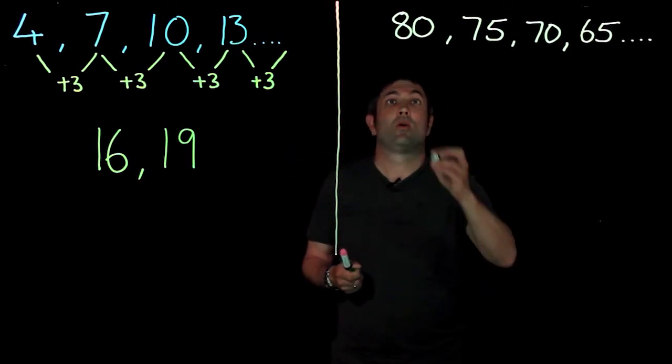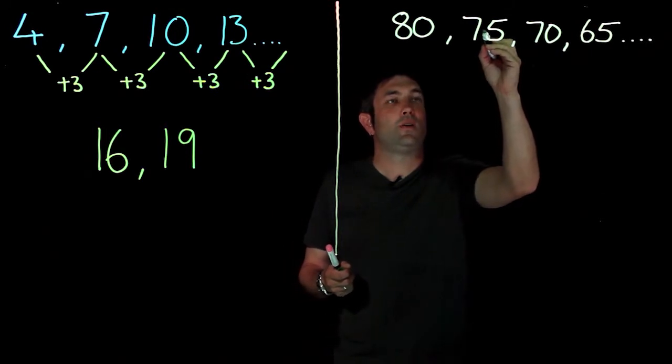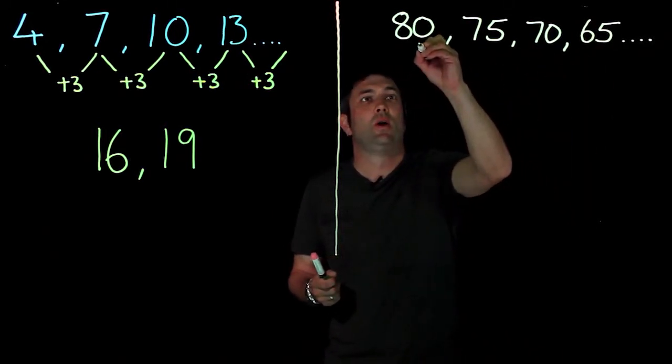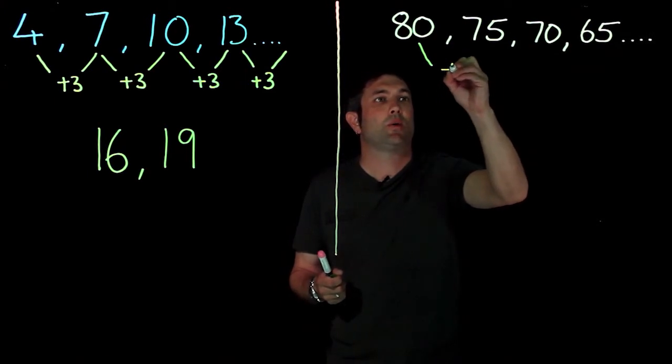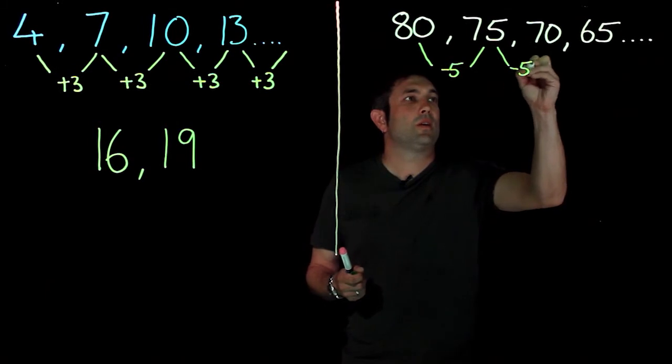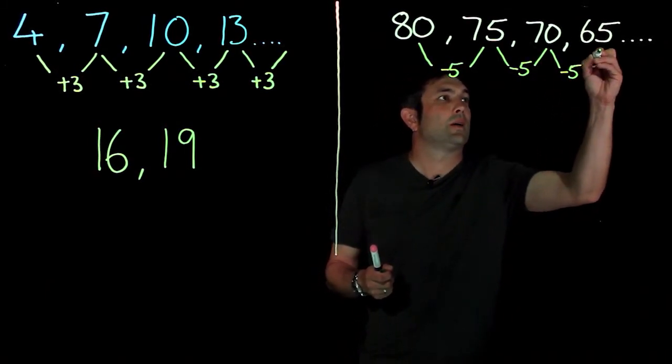All right, so what have I got to take away this time to get from 80 to 75, 75 to 70, 70 to 65? So what do I take away each time? I take away 5, take away 5. Carry on the sequence, it's the same amount each time. In this case, take away 5, so I'm going to be taking away 5 there to get whatever's there.